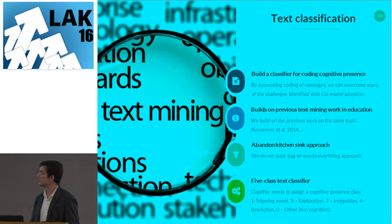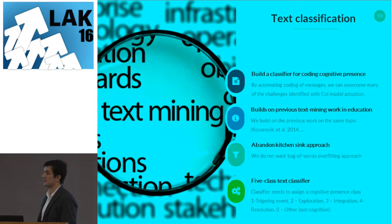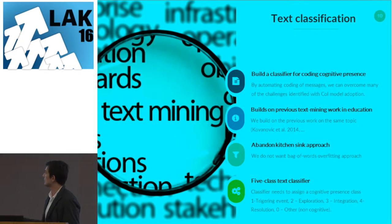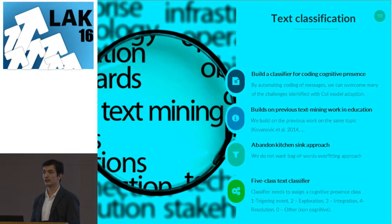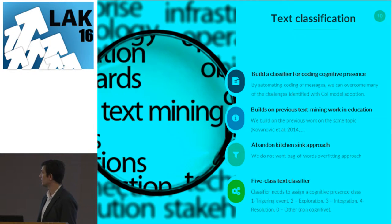Our idea was to use text mining to try to automate this problem. It started very like, 'Oh, it's going to be a simple, easy problem to solve.' So we set out to build a classifier for coding cognitive presence. There are four phases plus messages that are not in any phase, so the classifier needs to tell you which phase any given message belongs to. This builds on previous work in text mining and education, abandoning the kitchen sink approach of unigrams and bigrams with no theoretical background.